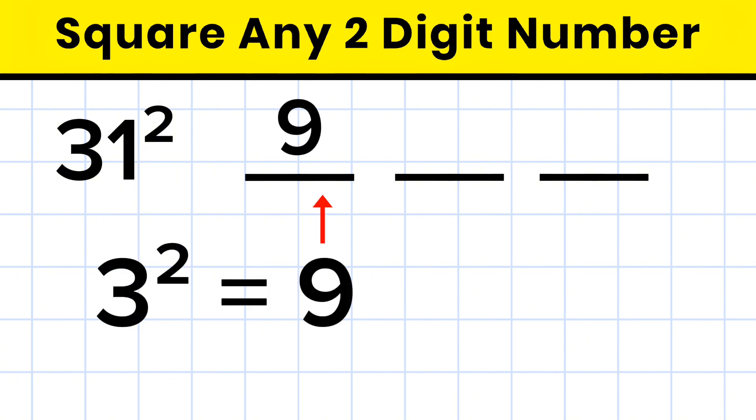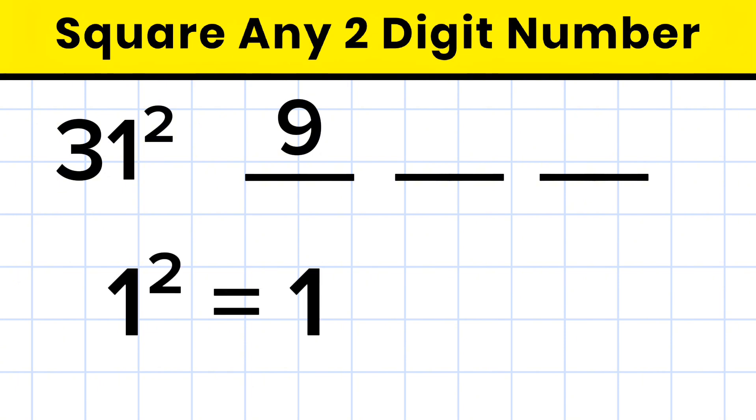So write it down here. Second, next square the last digit. That is 1 square equals 1. So we'll write this down here. Now, for the middle part,